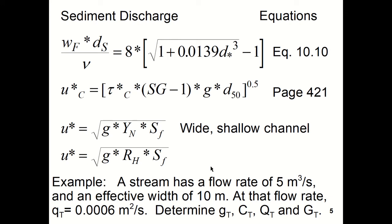Okay, here's the example. A stream has a flow rate of 5 cubic meters per second and an effective width of 10 meters. At that flow rate, q sub t, the volumetric sediment transport per unit width, is 0.0006 cubic meters per second per meter of width.